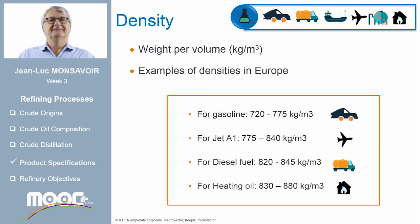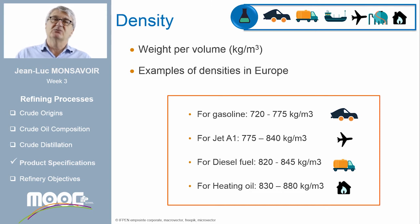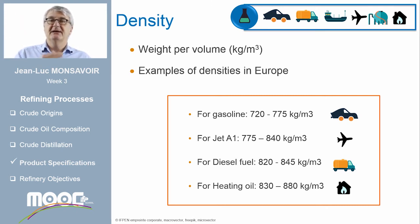Let's start with density. Density is a specification widely used to characterize petroleum products. It is expressed as the weight of a product per cubic meter of the same product. When the carbon number of a cut increases, the density has a higher value. For instance, the density of gasoline is lower than the density of jet fuel.